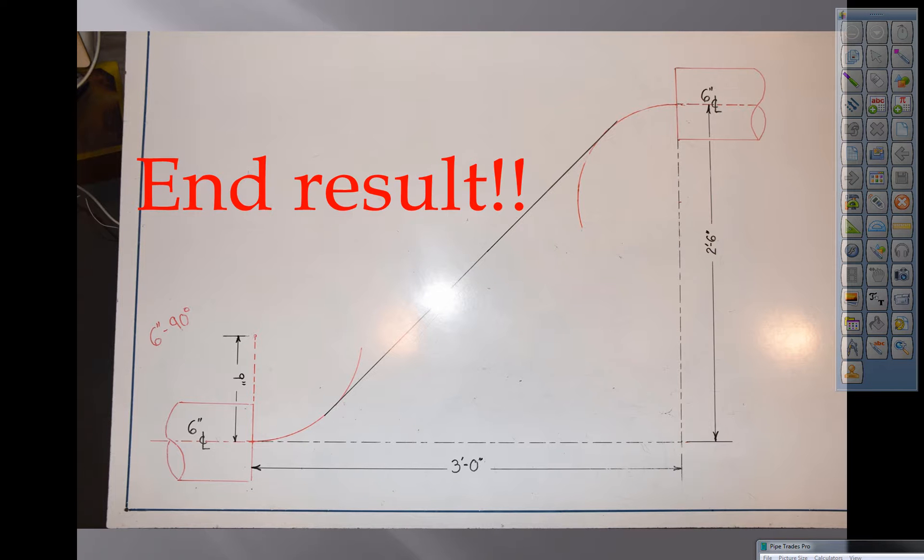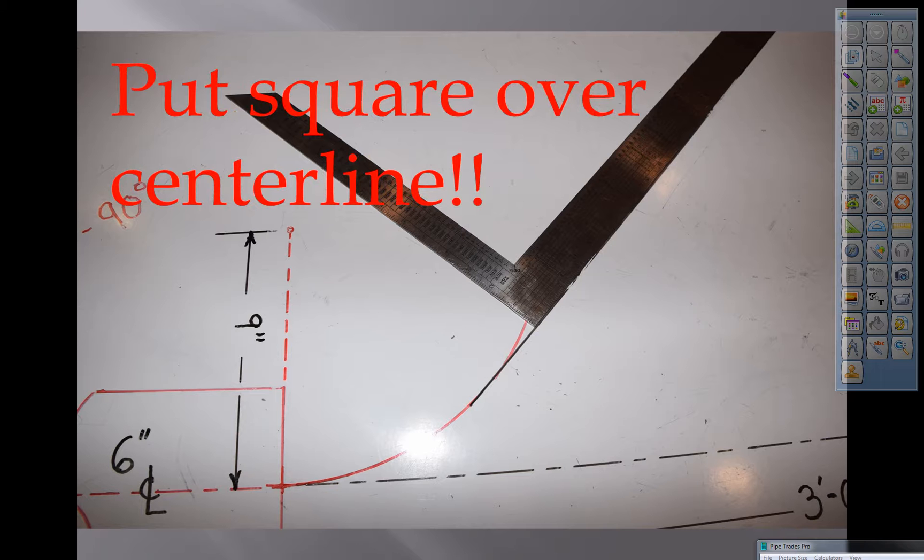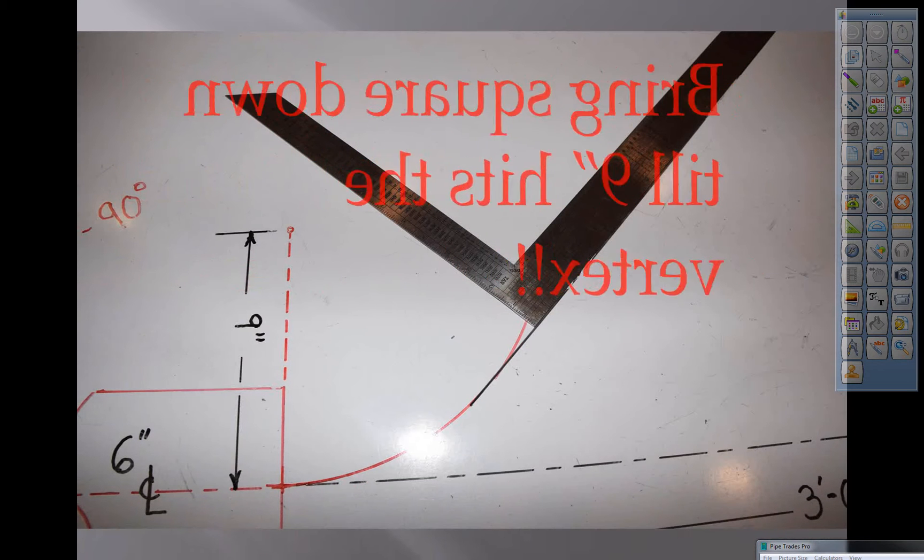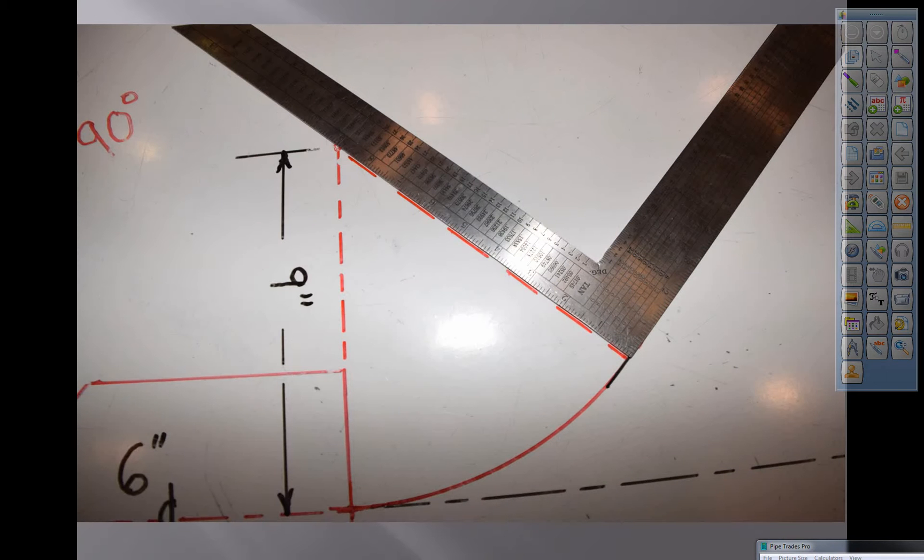The arcs were predetermined by the pipe size. And the two foot six and three foot is by our field conditions. Now we're going to take our square. We're going to put it over the black center line. What we're going to do is we're going to bring it down until it hits the vertex. And we know that that has to hit at nine.